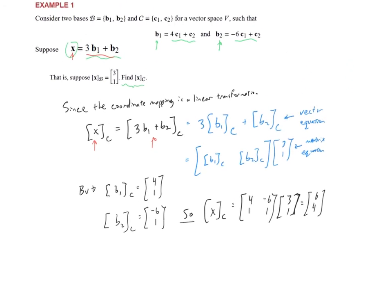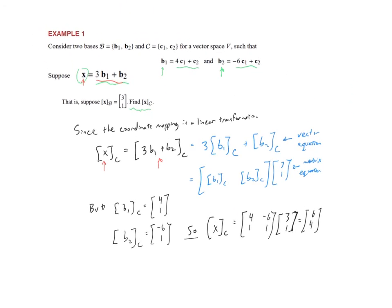Stepping back and looking at what we did: we took b1 and b2 in terms of c, those weights formed the matrix, and that matrix gets multiplied by the weights of x in terms of basis b to produce x in terms of basis c.